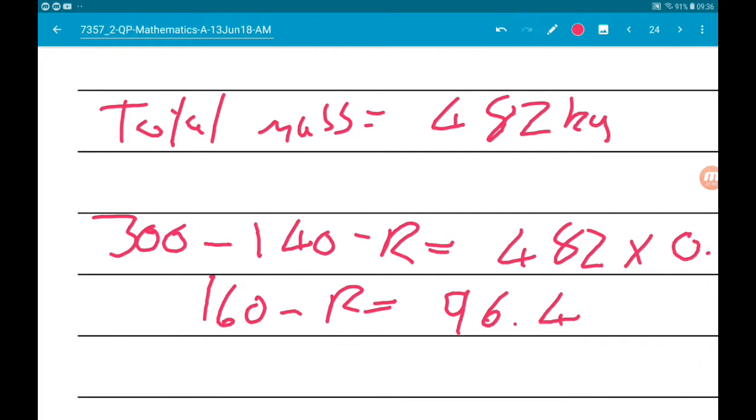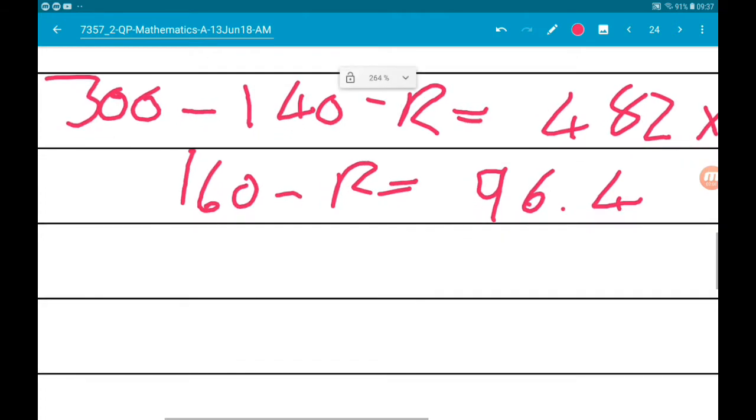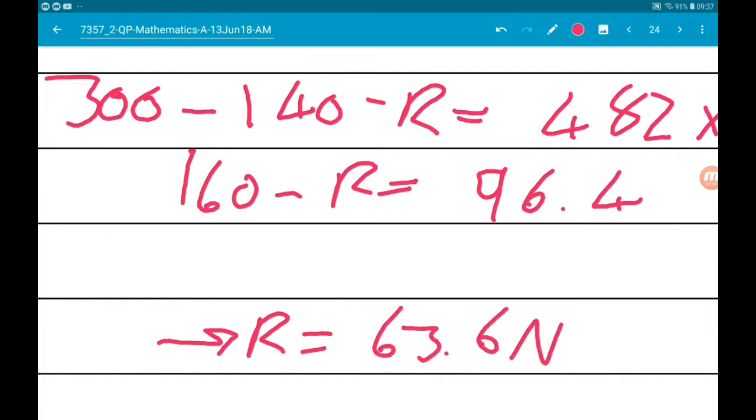So that's going to give us 160 minus R is equal to 96.4. If we take away the 96.4 and add the R, we get that R is 63.6 newtons.